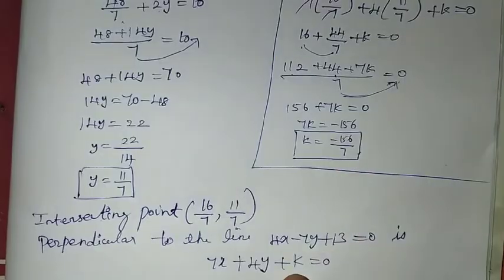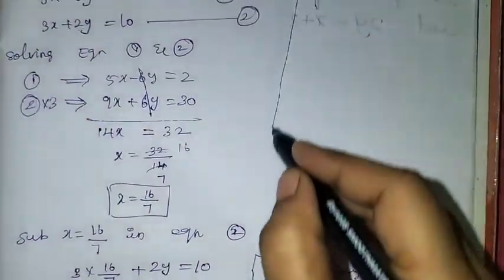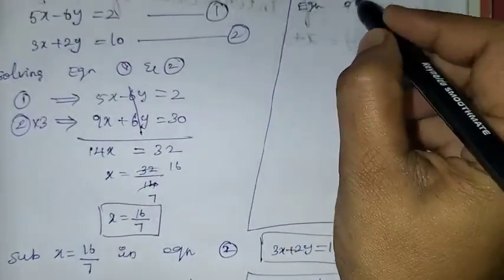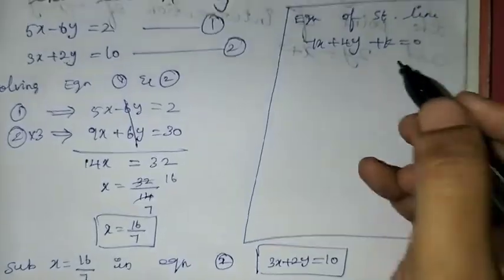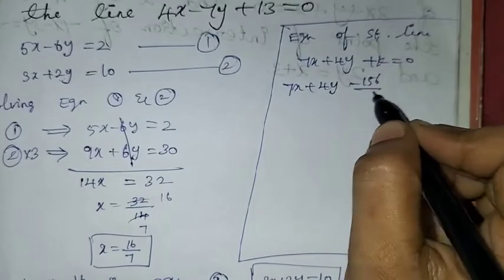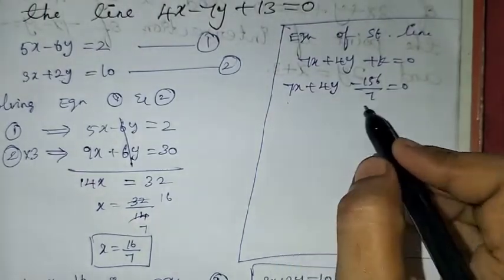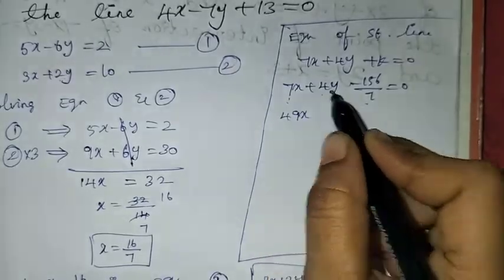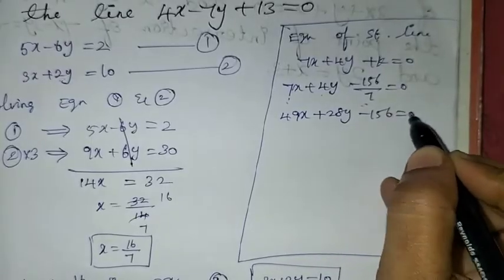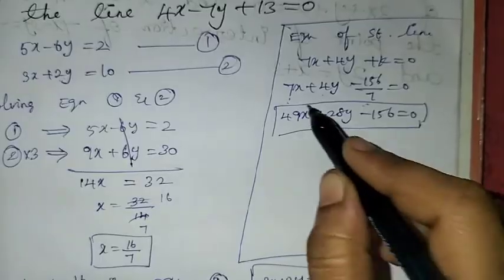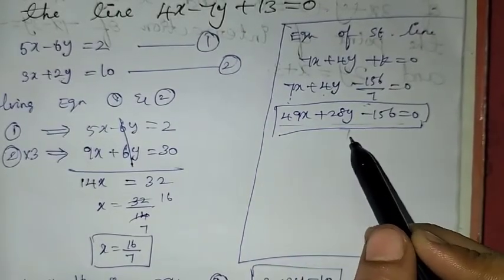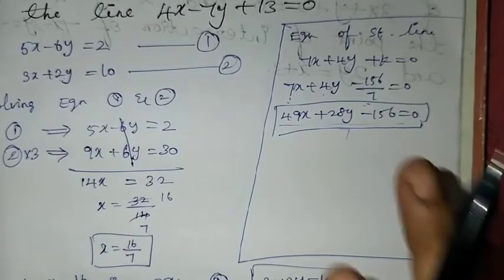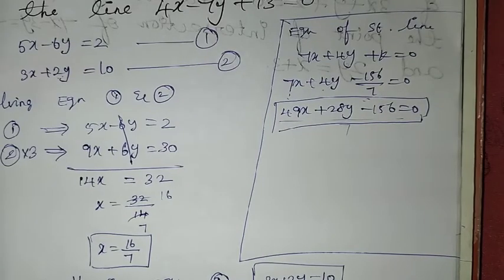Substituting k back into the equation and multiplying through by 7, we get 49x plus 28y minus 156 equal to 0. This is the equation of the required straight line. This can also be derived using the point-slope form directly.